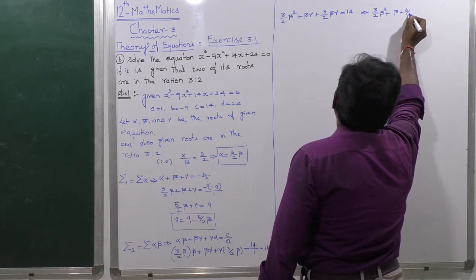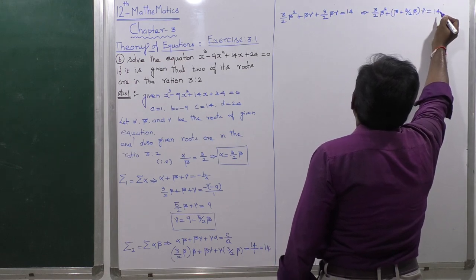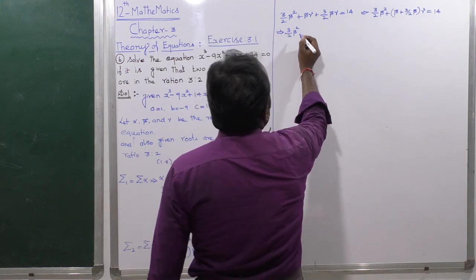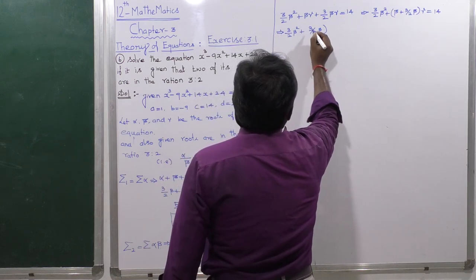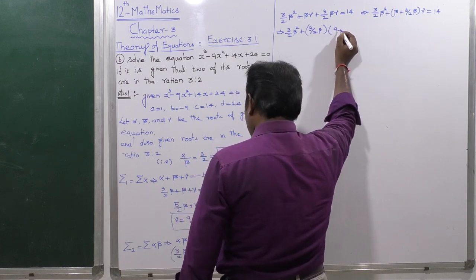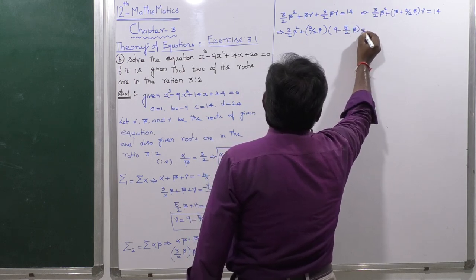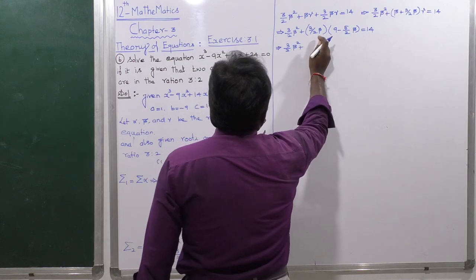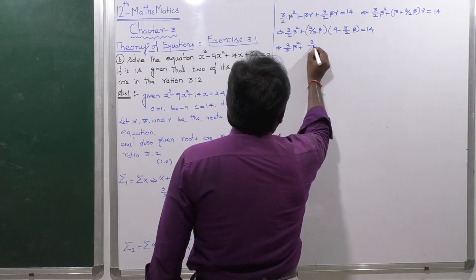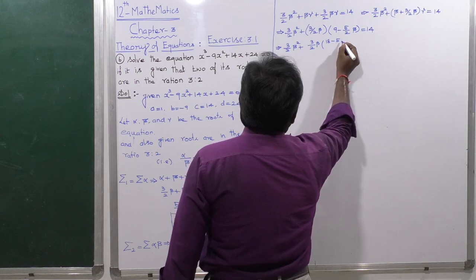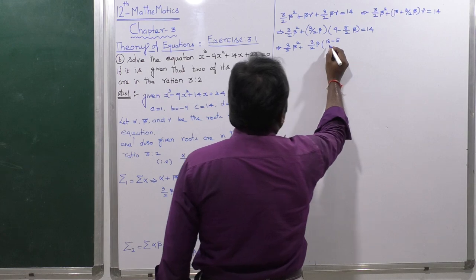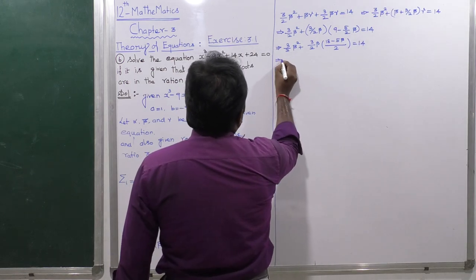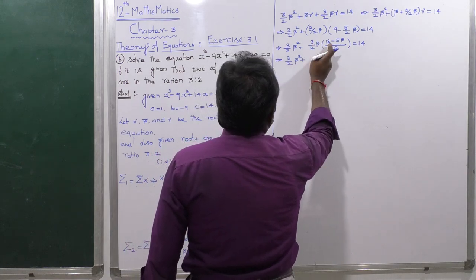Substituting γ = 9 - (5/2)β into the equation: (3/2)β² + (3/2)β·(9 - (5/2)β) = 14. Expanding the bracket: (3/2)β² + (3/2)β·(18 - 5β)/2 = 14.